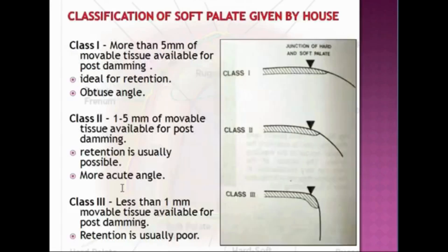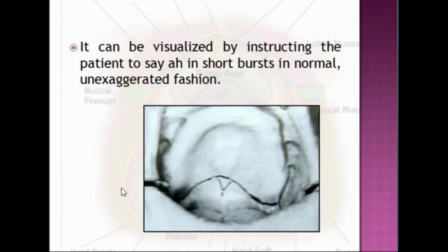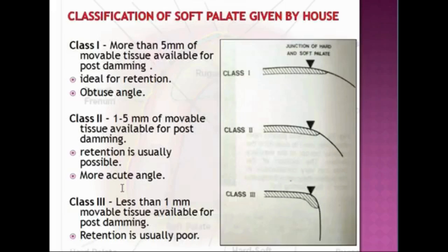The posterior palatal border has both width and depth. The width of the posterior palatal region is the distance from the true junction to the vibrating line, and the depth of the posterior palatal seal area varies according to the movement of the soft palate. Depending on the nature of the soft palate, there are three types of attachment — Class 1, 2, and 3 — as given by House.